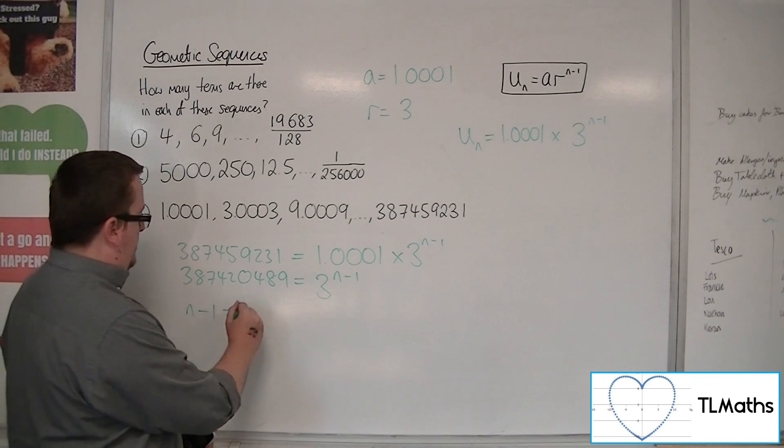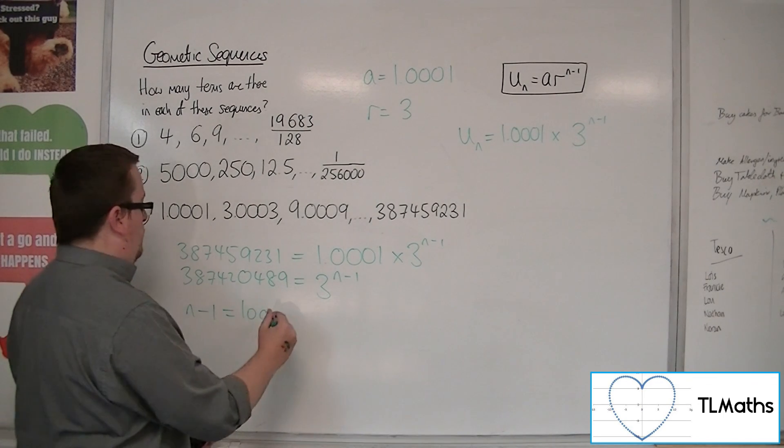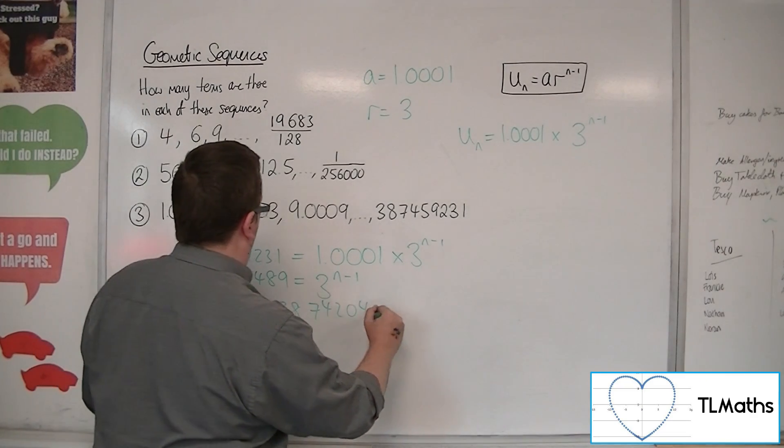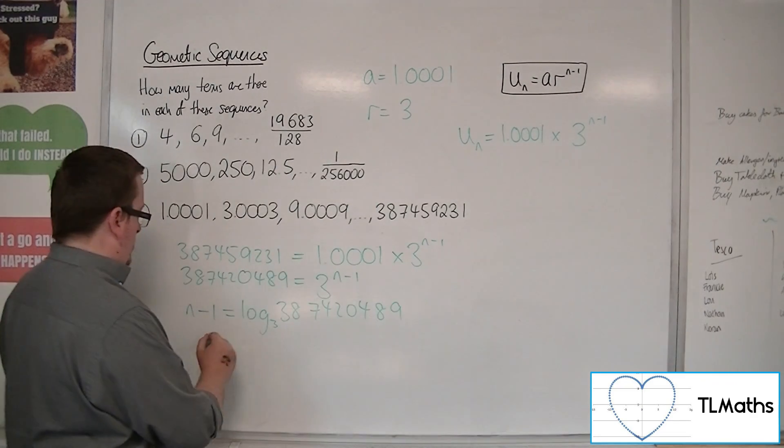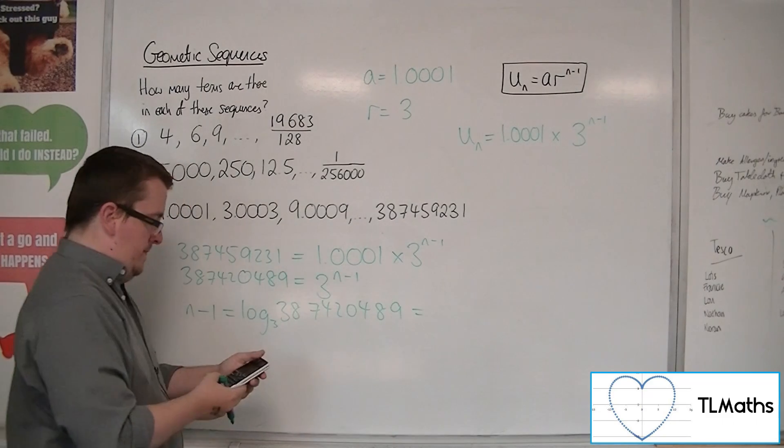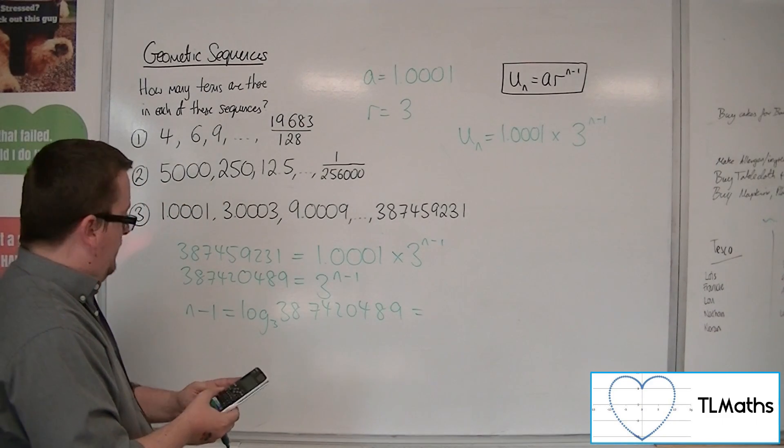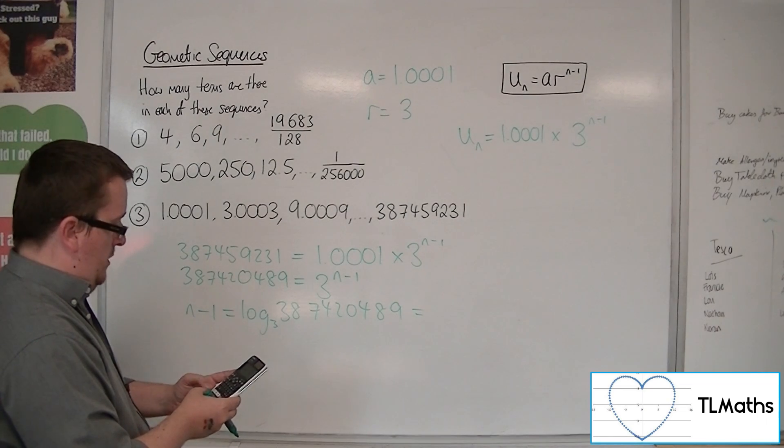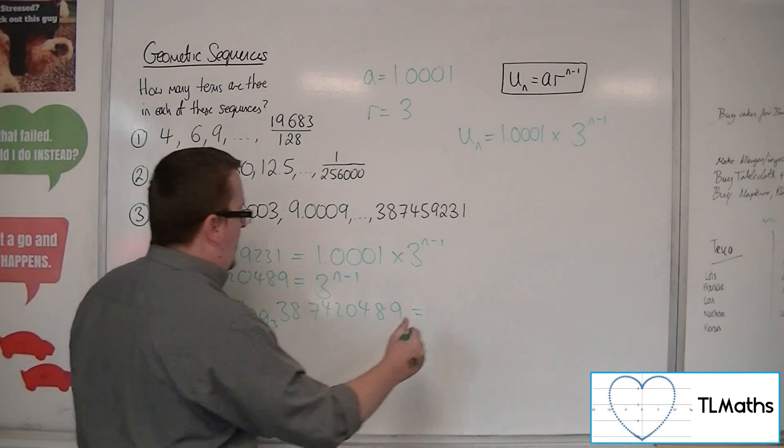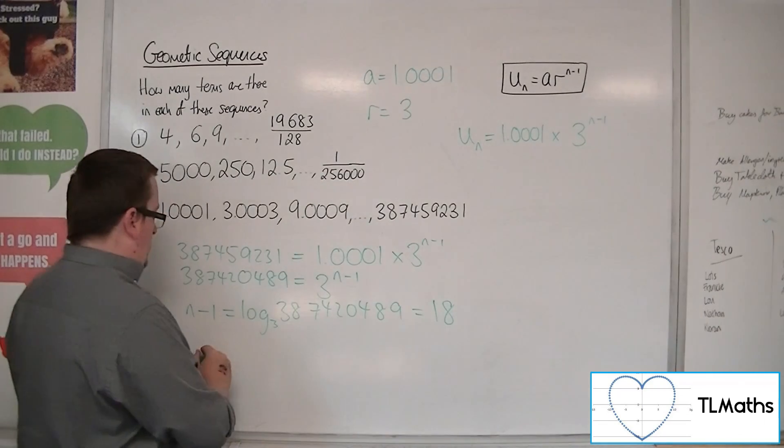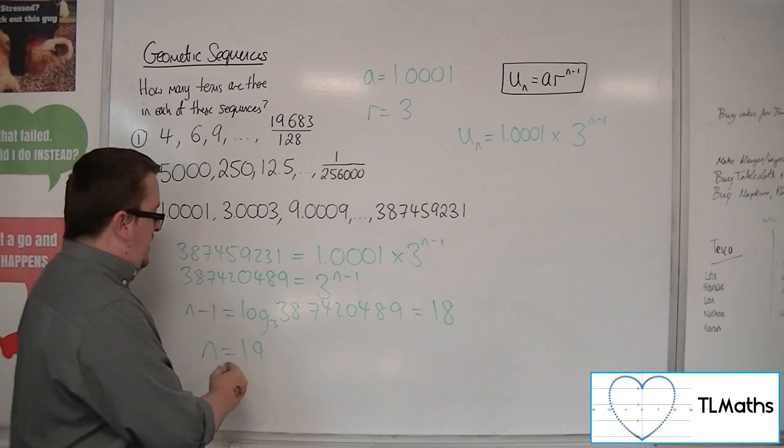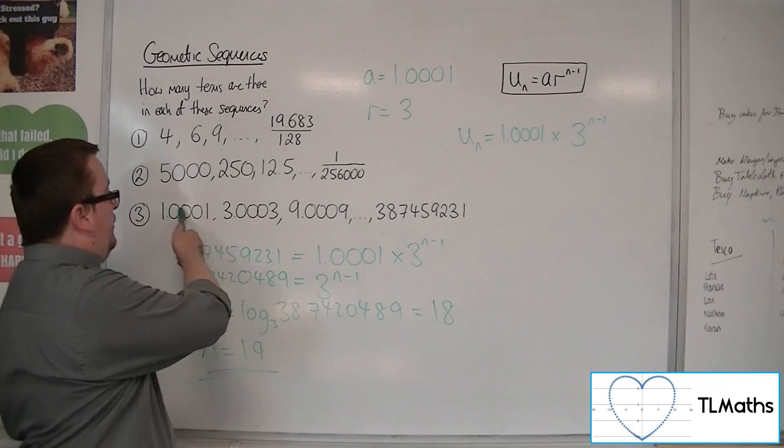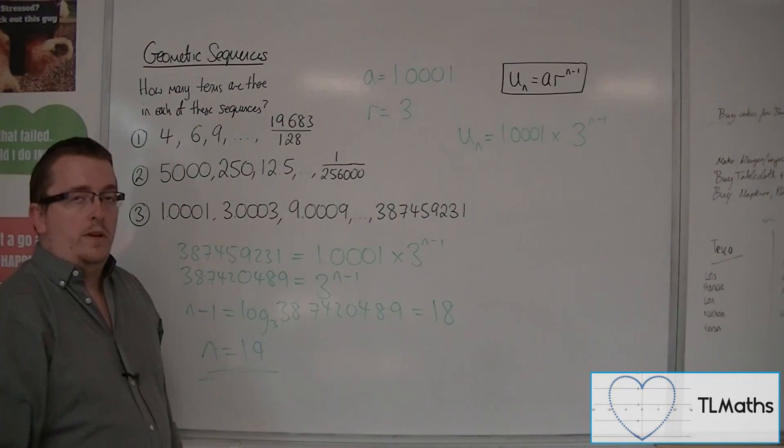Now log both sides, so we have log base 3 of 387420489. Okay, so pop that into your calculator, 387420489, and we get 18. So adding 1 to both sides means we have n is 19. There are 19 terms in sequence number 3.